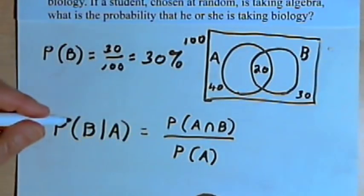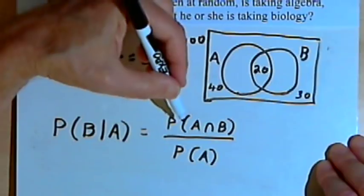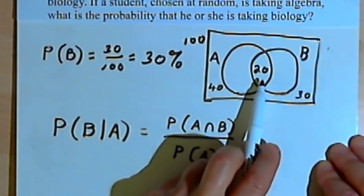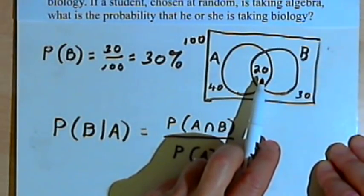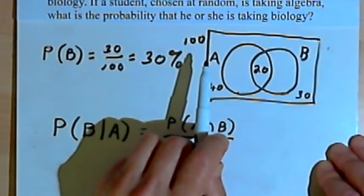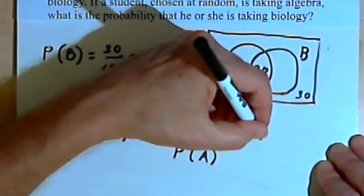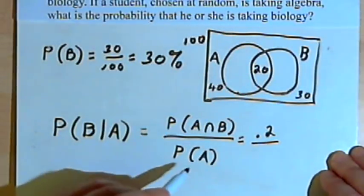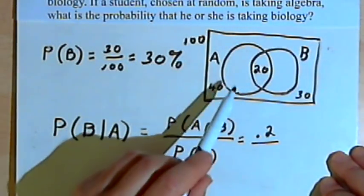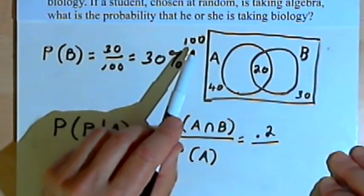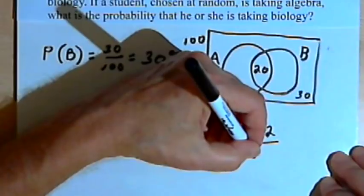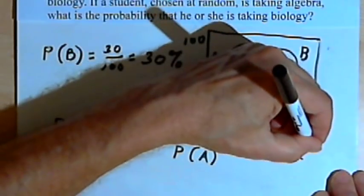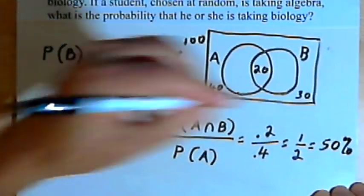Let's put some numbers in here. The probability of the intersection of A and B: that intersection is 20 students out of 100, so P(A∩B) = 20/100, or 0.2. The probability of A: there are 40 students in group A out of 100 total, so P(A) = 40/100, or 0.4. Dividing 0.2 by 0.4 gives us one-half, which is 50%.